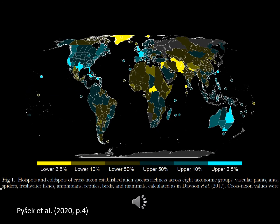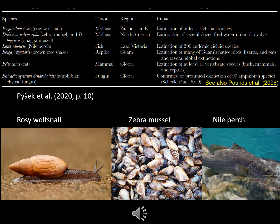This map enclosed in Pisek et al. shows which regions have the highest shares of alien species, calculated as the number of established aliens relative to the species richness in that relevant taxonomic group, and subsequently averaged. The paper also includes a table of the most notorious invasive aliens in terms of number of extinctions attributed to them. In general, Pisek et al. mention that invasive predators are more likely to lead to extinctions than alien competitors.